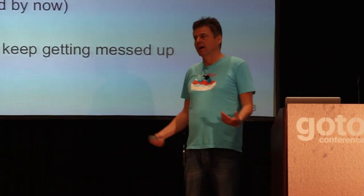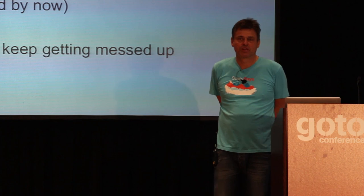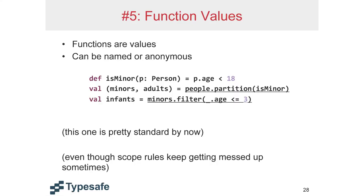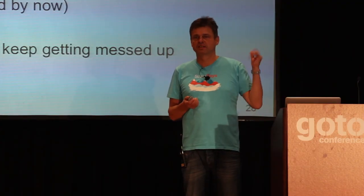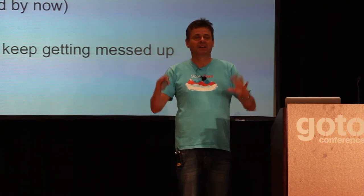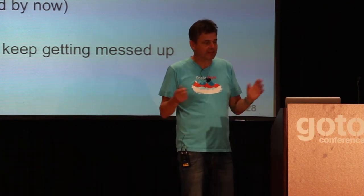Number five is function values. That one is pretty uncontroversial by now — almost all languages out there have some form of function values. Sometimes they get the scope rules a little wrong, like the meaning of 'this' in JavaScript closures is a little funky, but by and large it's the right thing.